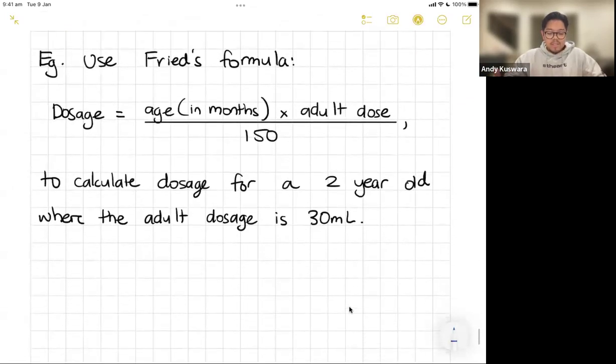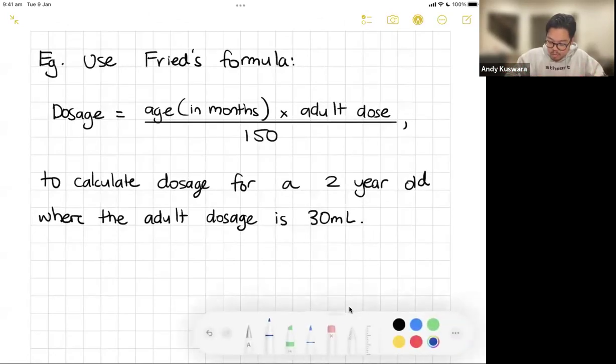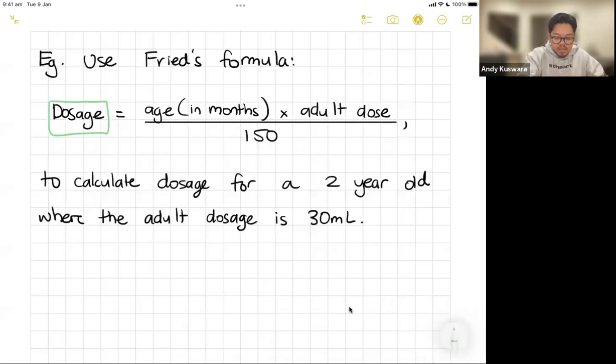So now this is an example. There's Fried's - there's two more types of formulas. Fried's formula, there's two others, long story short, but all you need to do is make sure you read carefully how the formula works. Now the child dosage - the way that you figure this out is it's going to be age in months, you're going to know the adult dose, and you put it over 150.